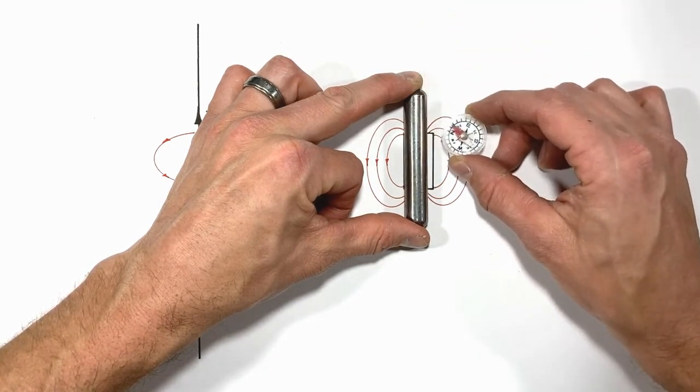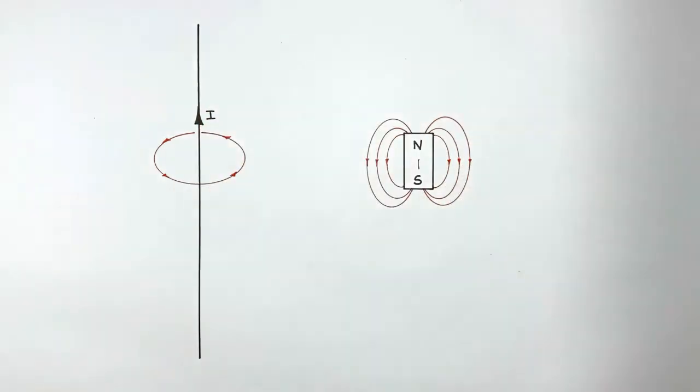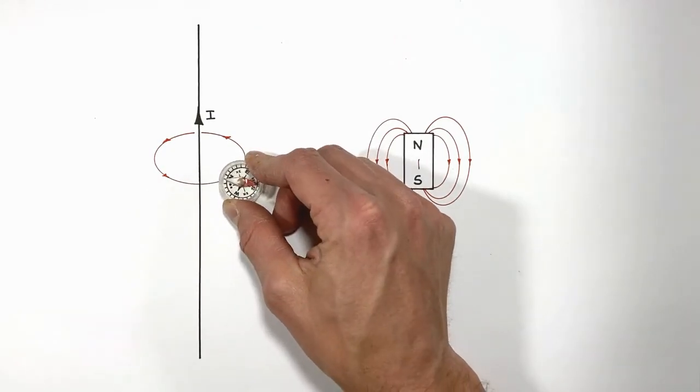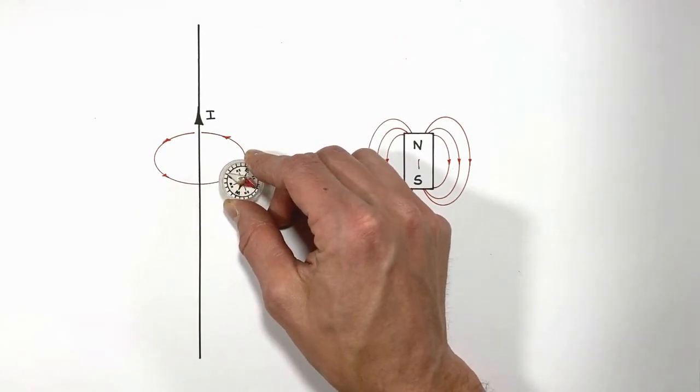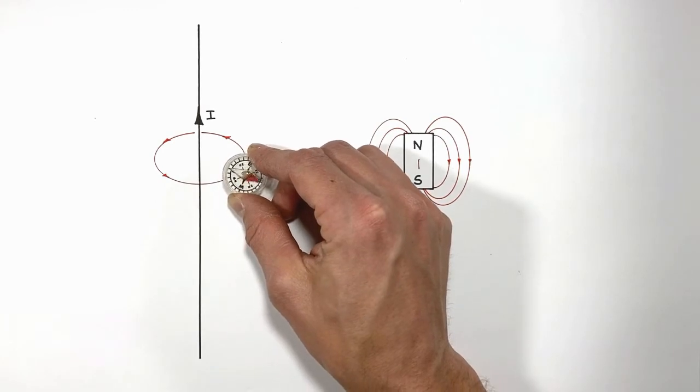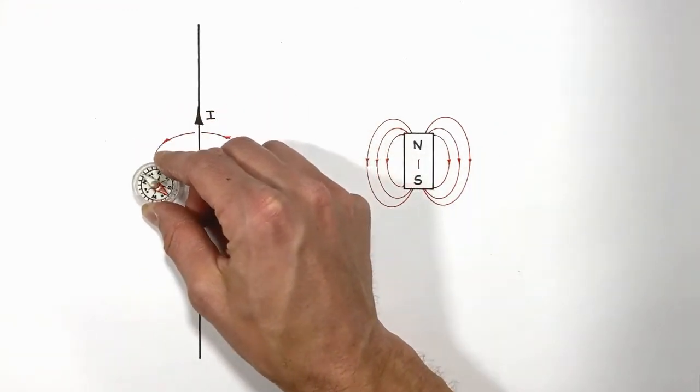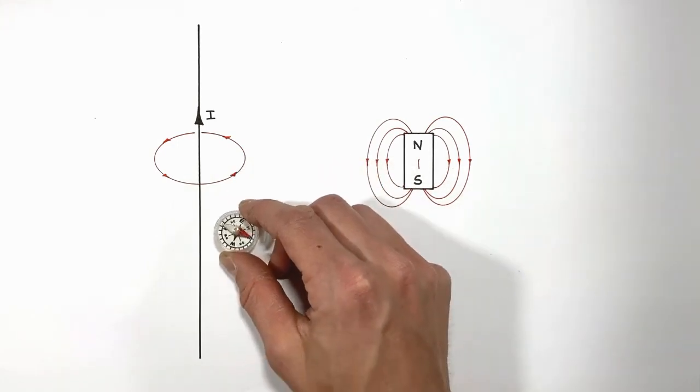If I was to do the same thing and hold a compass close to a current carrying wire, I would see the same thing. The compass would always be pointed in the direction of the magnetic field, which around a wire is in a circle.